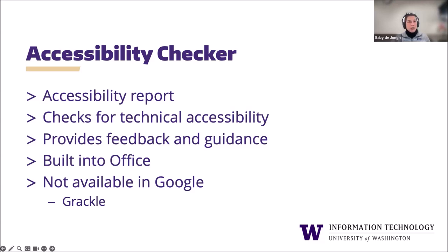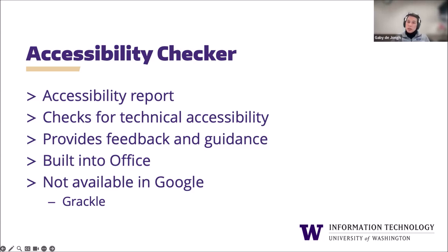Document accessibility checkers are automated tools that can help the author validate the technical accessibility of a document. In some cases they can also help with fixing any issues that appear in an accessibility report. Accessibility checkers verify the document against a set of rules that identify possible issues causing barriers to accessibility — not 100% perfect, but they do provide feedback and guidance on how to fix accessibility issues. There is an accessibility checker built into Office 365 and Windows, and I'll show you how to access that.